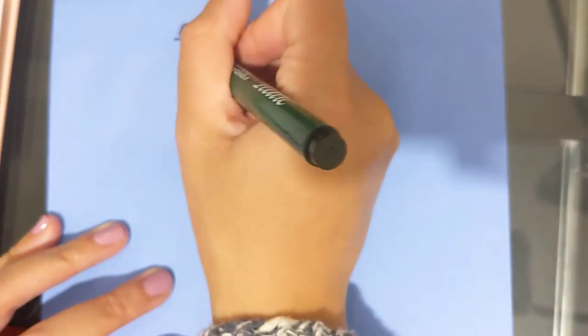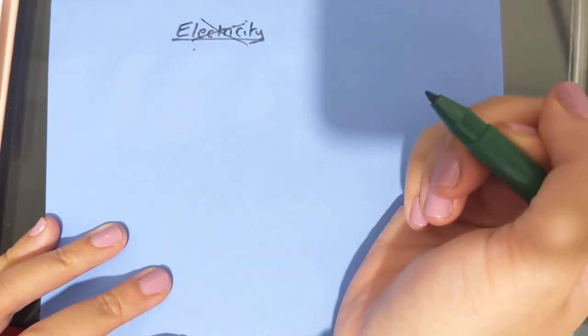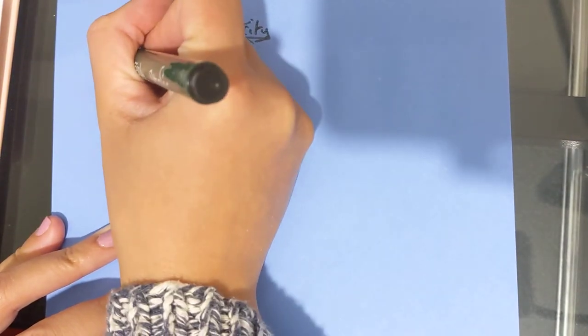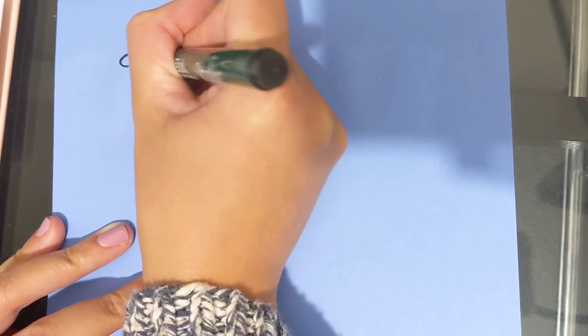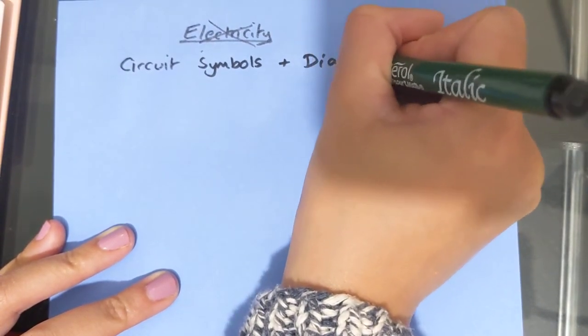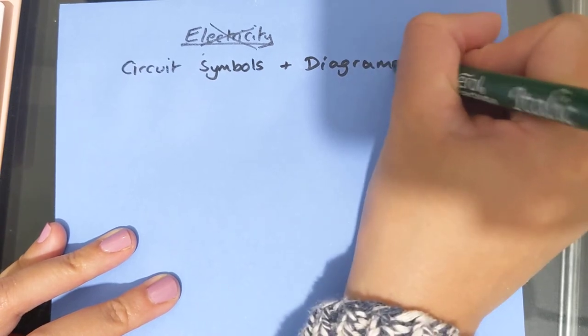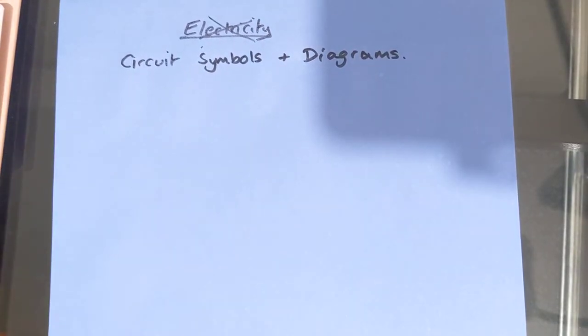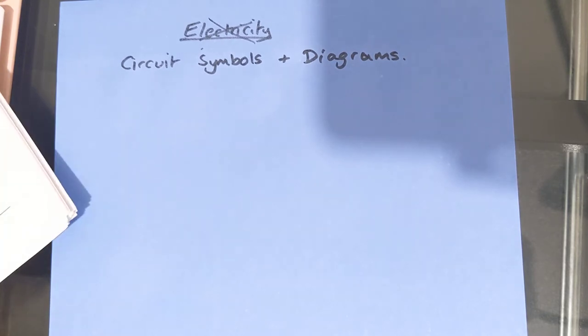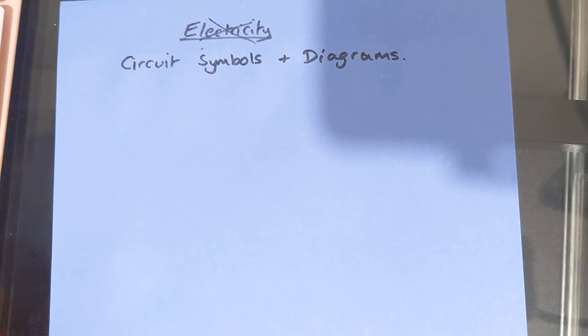We use words like current, charge, potential difference, resistance. So today's video is on circuit symbols and circuit diagrams. And one of the things that we need to do when we're talking about electricity as a topic is we need to be able to understand it and describe our electric circuits. So the first part of your specification says that circuit diagrams use standard symbols and that students should be able to draw and interpret circuit diagrams.